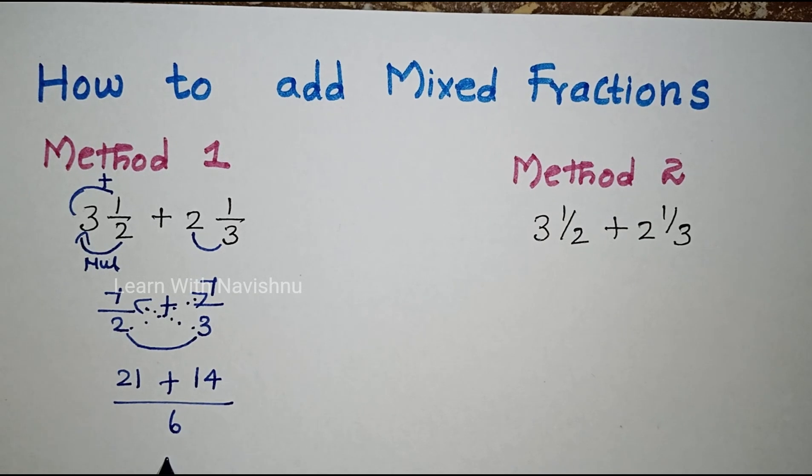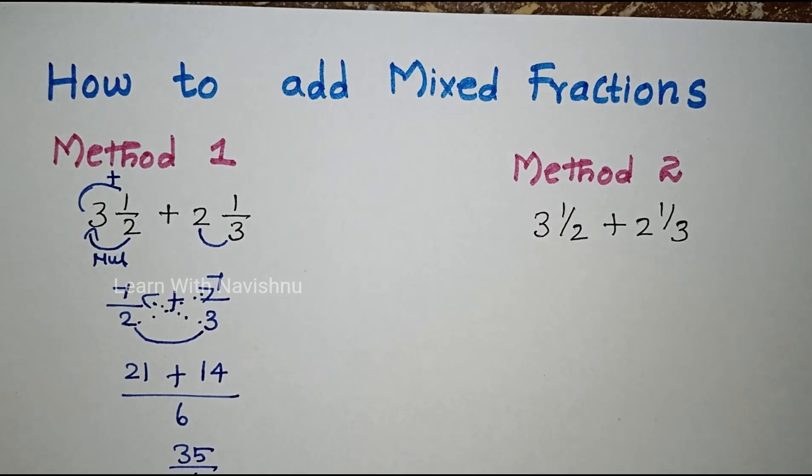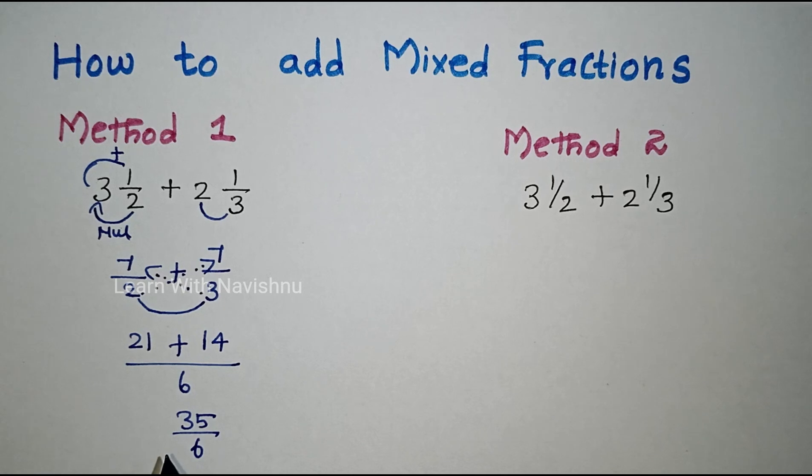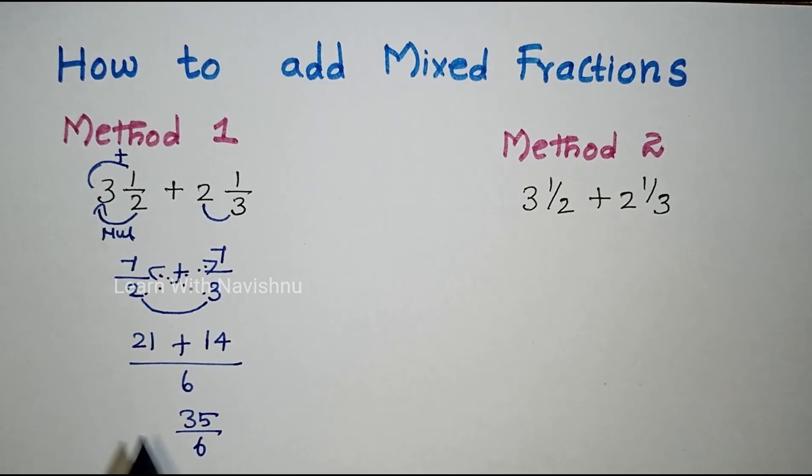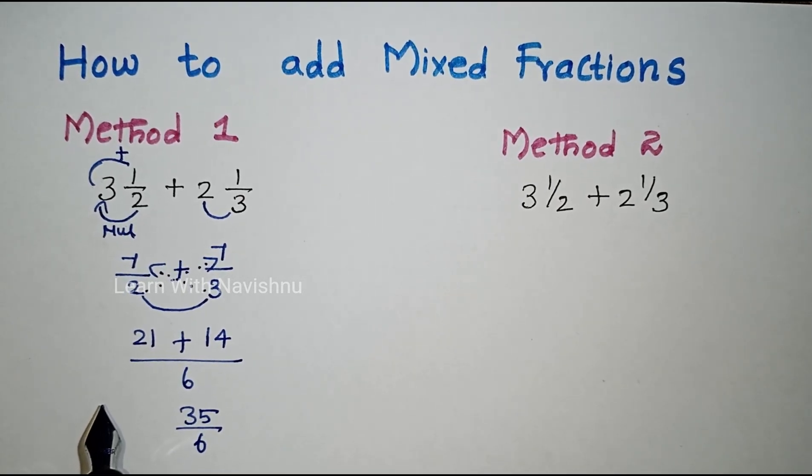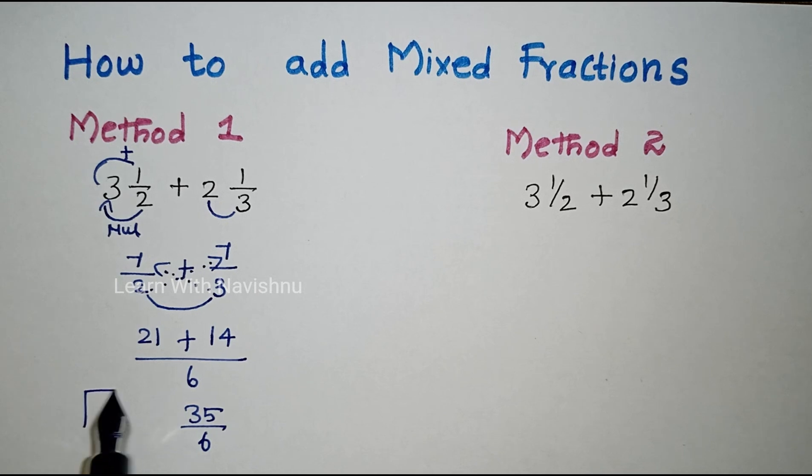So we need to add: 21 plus 14 equals 35 over 6. If you have a question with mixed fractions, the answer is mixed fractions.